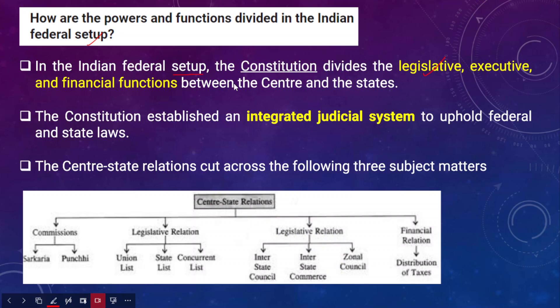This integrated judicial system upholds both federal and state laws. Center-state relations cut across three subject matters. The first is legislative relations, which are further categorized into the union list, state list, and concurrent list.